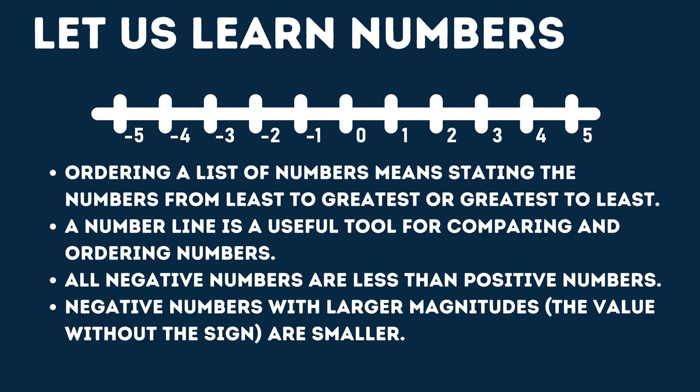Now let us check the number line. So far we saw zero to 100, which are positive numbers. There will be negative numbers as well. If you see the number line, the left side of zero has negative numbers. Negative numbers decrease in value as they increase — that means negative 5 is lesser than negative 2.